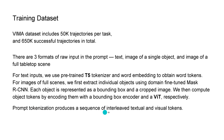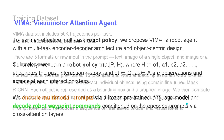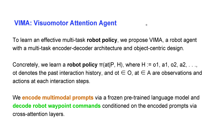The prompt organization produces a sequence of interleaved textual and visual tokens. The interesting part is the attention agent VIMA. The authors propose an effective multi-task approach — they say it doesn't make sense to learn a robot on one task, then the next, then another. Instead, multiple tasks are learned simultaneously by a specific robot policy encoder-decoder architecture. First, we encode the multimodal prompts using a frozen pre-trained language model, then we decode the robot waypoint commands for control of the robot arm, conditioned on the encoded prompts.